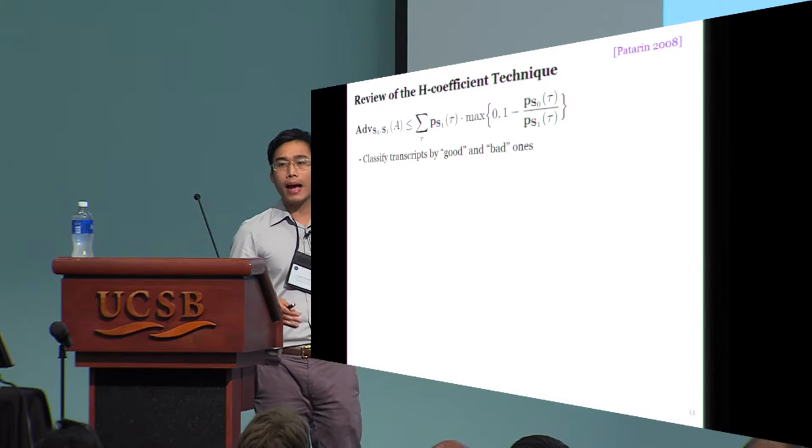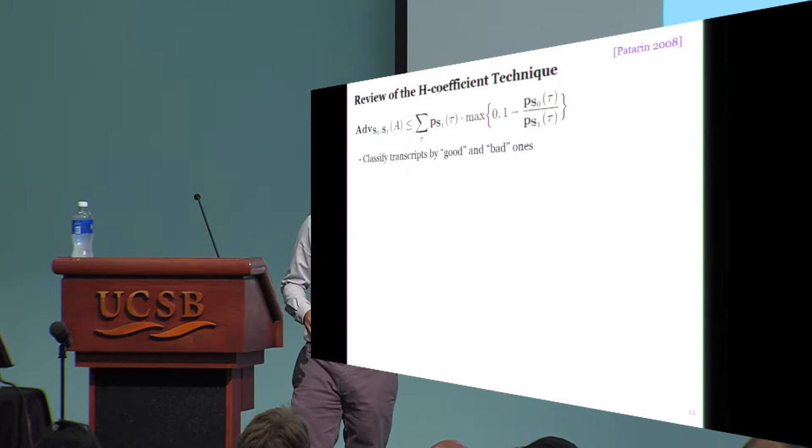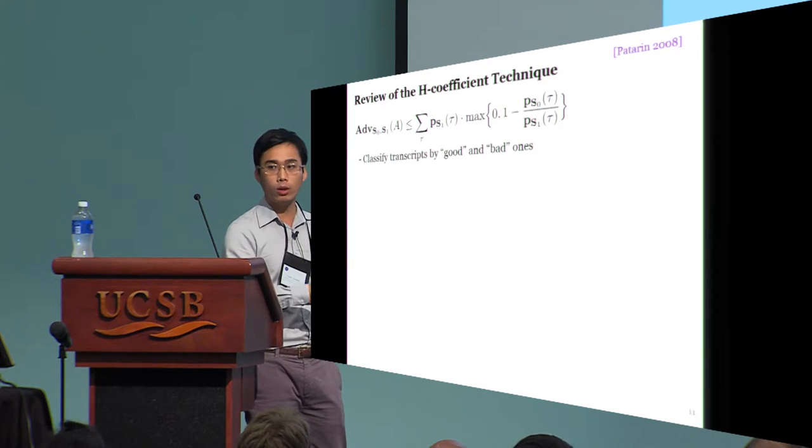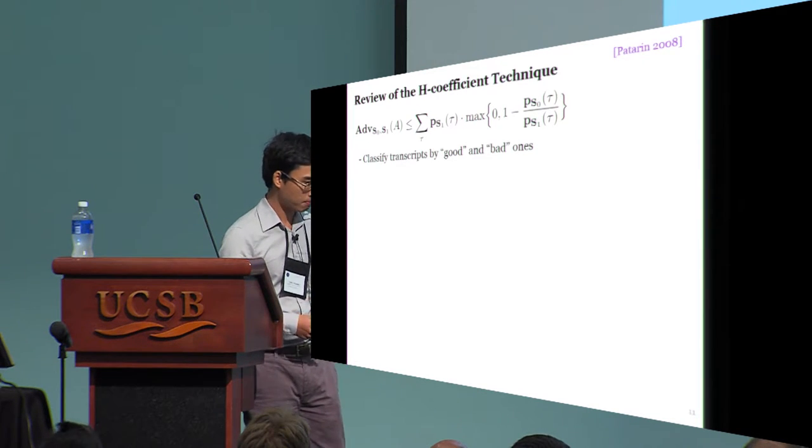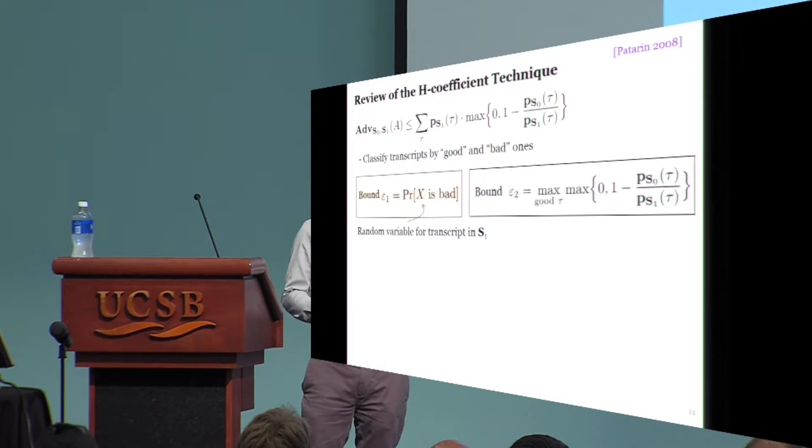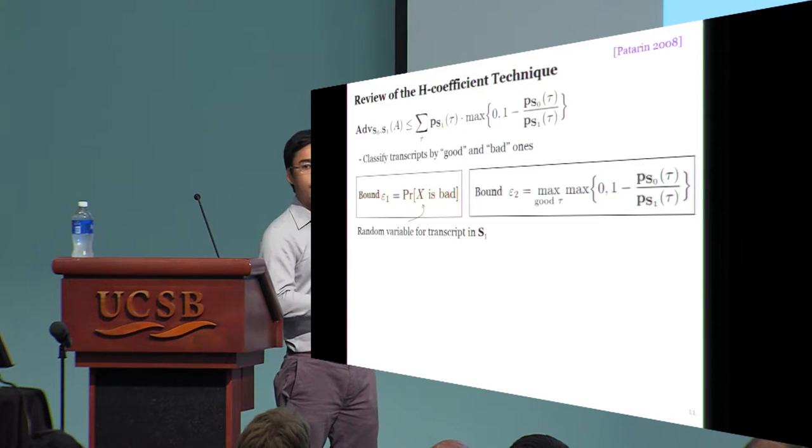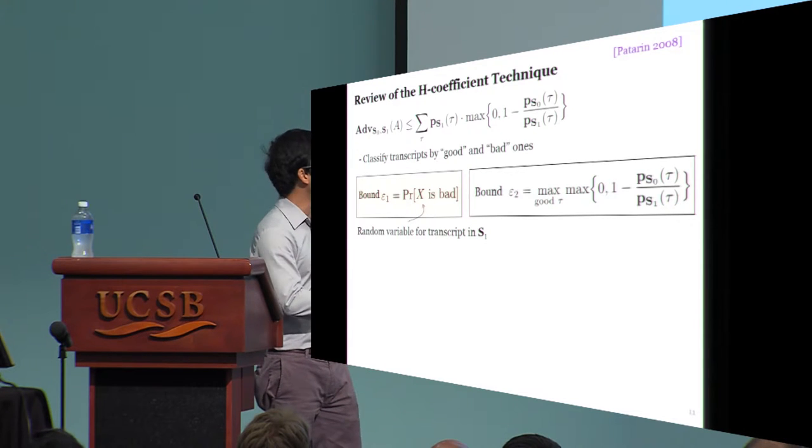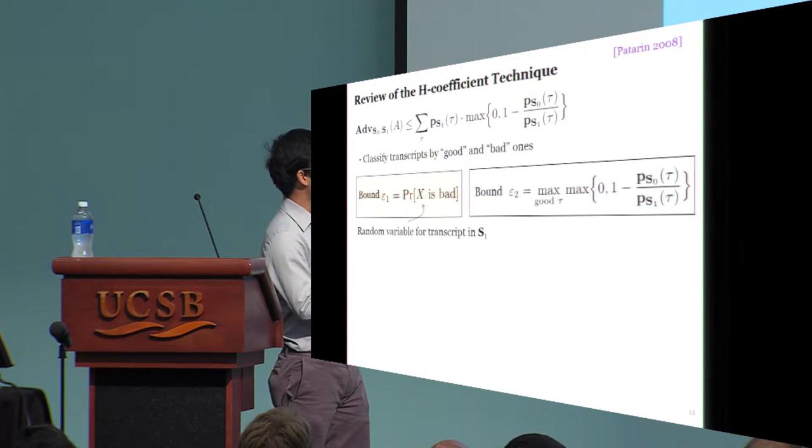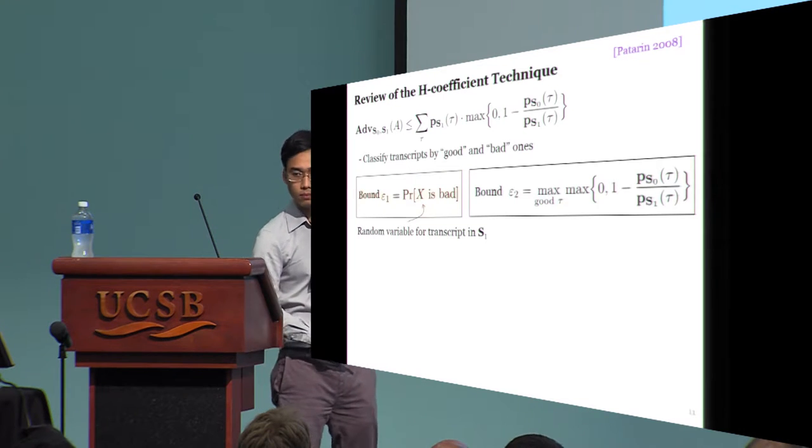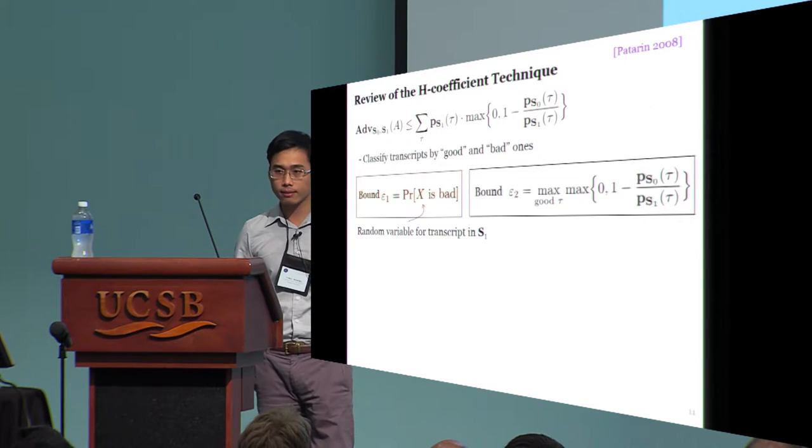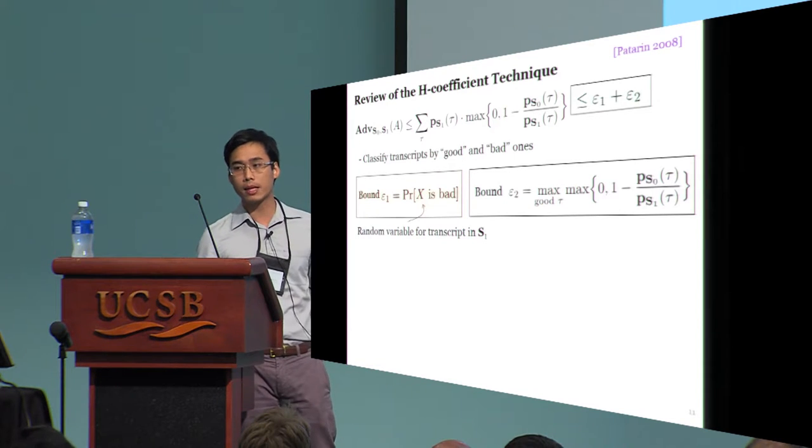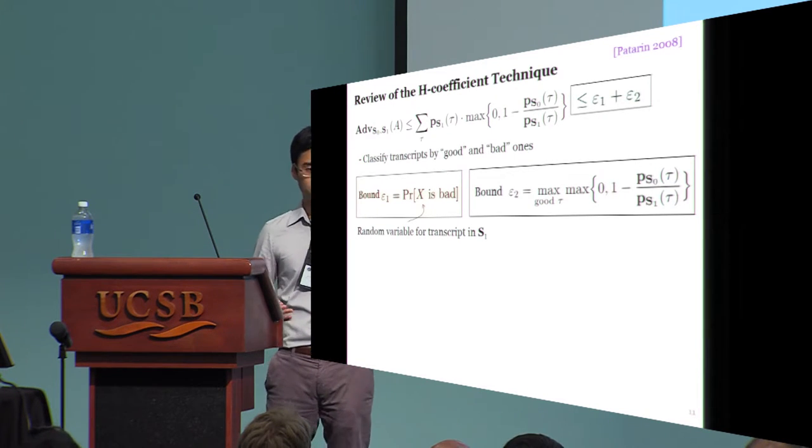To bound the statistical distance, you first need to classify transcripts by good versus bad ones. The next step is to bound the probability that a random transcript is bad, and the maximum over all good transcripts of this formula. Once we are done with that, the distinguishing advantage is bounded by the sum of these two numbers, epsilon 1 and epsilon 2.